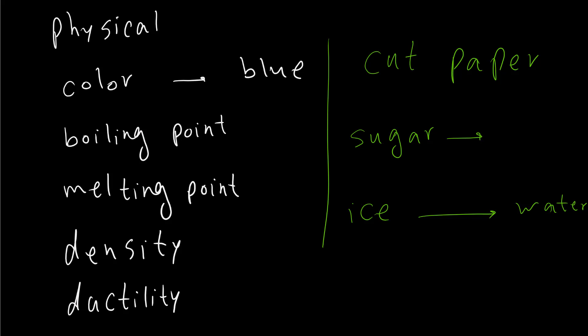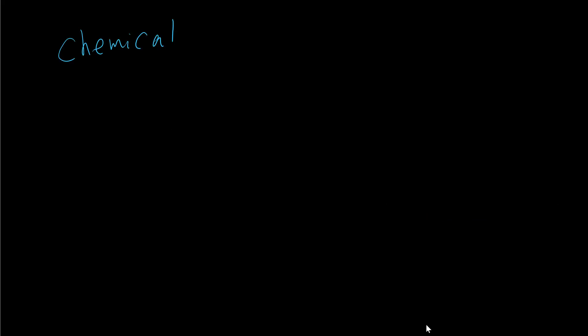Let's have some examples of chemical properties and chemical changes. Chemical properties are characteristics of a material involving the changing of composition of that compound. Here are some examples of chemical properties like reactivity. When we talk about reactivity, we talk about a chemical property. Flammability and chemical stability. Let's have some examples.